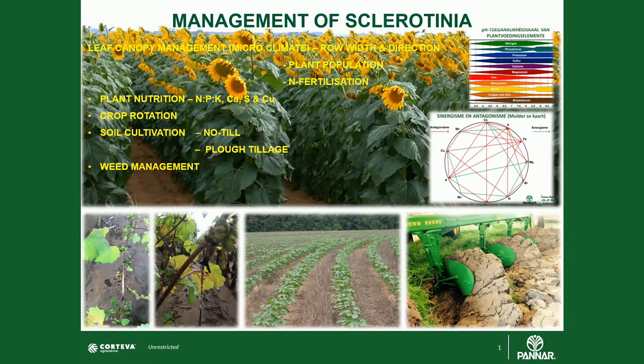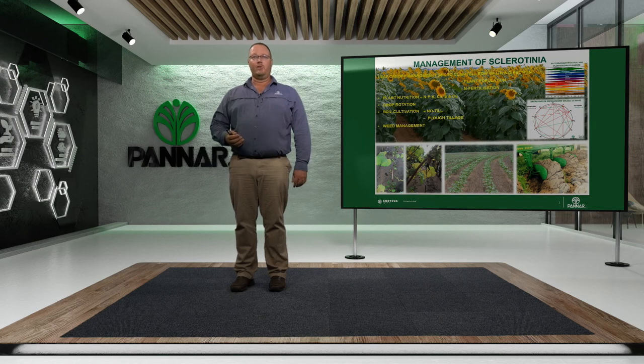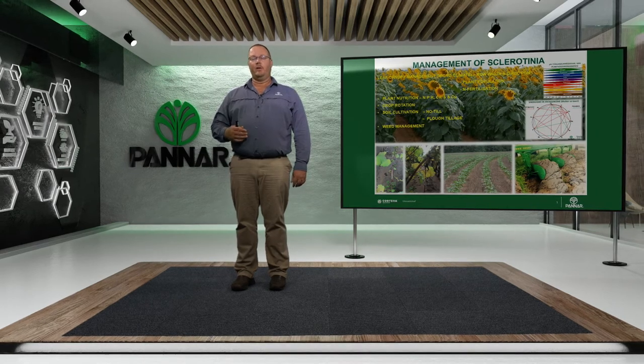Firstly, try to control the leaf canopy and the microclimate within the field. Consider increasing row width to allow better wind movement and sunlight penetration. Everything is focused on reducing humidity and increasing temperature to prevent sporulation. Reduce plant population to lessen the canopy effect, and avoid over-fertilizing with nitrogen, as this stimulates excessive vegetative growth and contributes to a closed canopy.